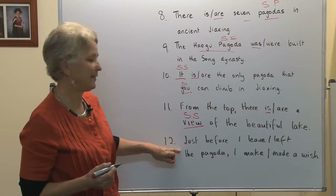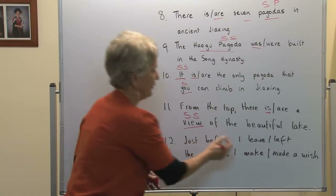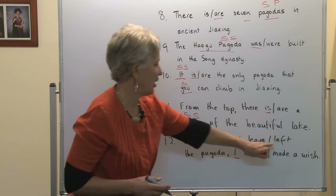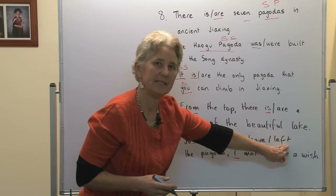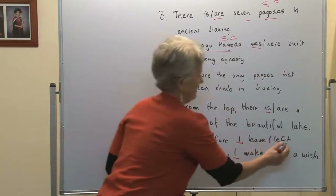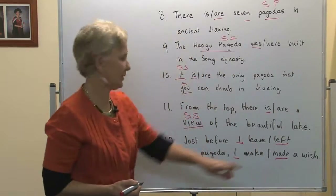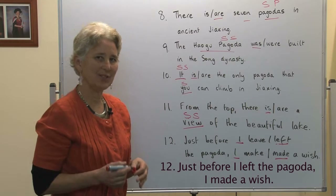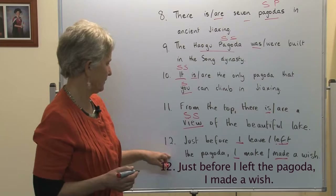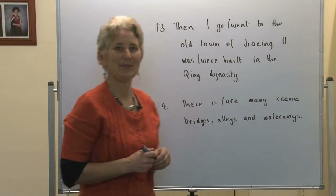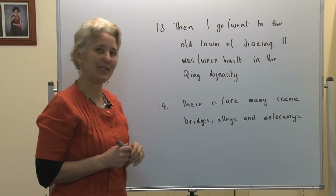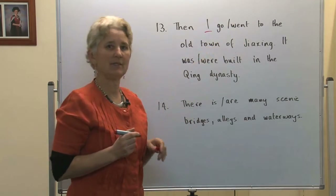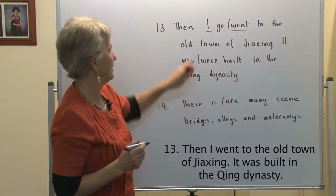Number twelve: just before I left the pagoda, I made a wish. Notice both I's are the grammatical subject of both clauses. I left — Pearl is talking about the past tense; 'left' is an irregular form of the past tense. I made a wish — both verbs are in the past tense, referring to something Pearl did while visiting. Number thirteen: then I went to the old town of Jiaxing. I is the grammatical subject; she's talking about something she did in the past tense. 'Went' is irregular.